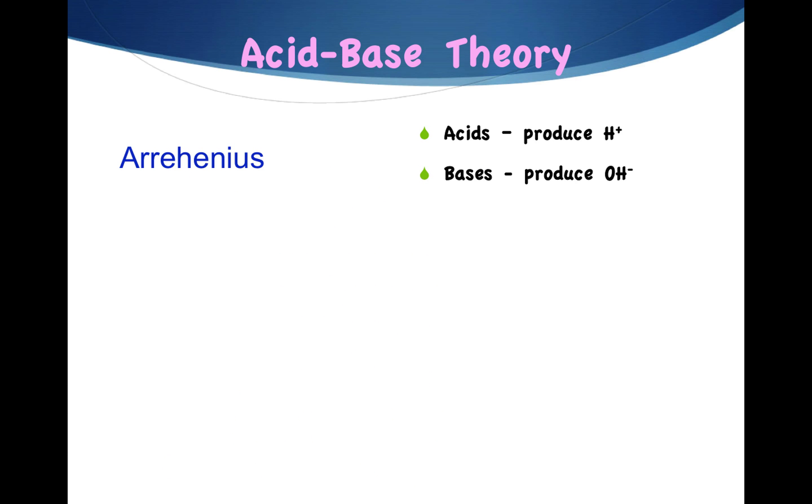We want to look at three different theories in defining acids and bases. We've already considered Arrhenius' theory. Arrhenius says that an acid is something that produces hydrogen ion in water, and a base is something that produces hydroxide ion in water.